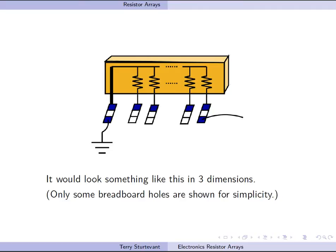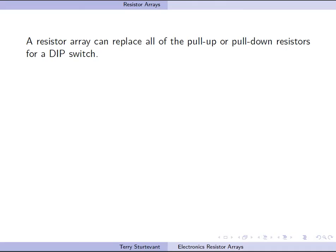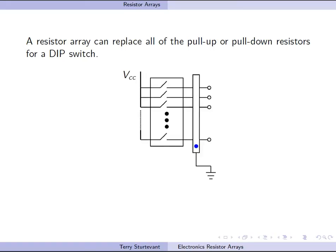Only some of the breadboard holes are shown so that it isn't too cluttered. You can replace all of the pull-up or pull-down resistors for a DIP switch or a keypad like this.